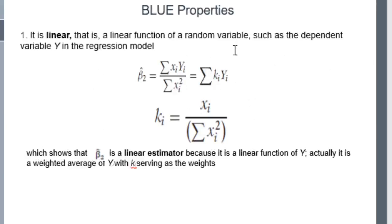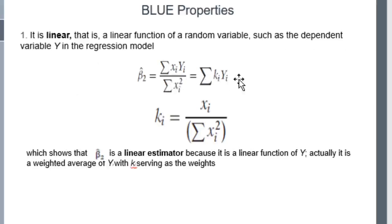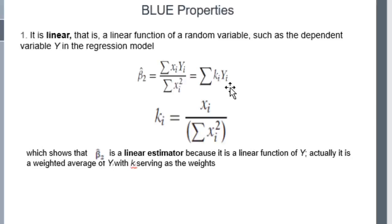The first property is linearity. The estimator is a linear function of a random variable such as the dependent variable. That is, beta2-hat equals sigma(xi * yi) divided by sigma(xi²), which equals sigma(ki * yi), where ki equals xi divided by sigma(xi²). This means beta2-hat is a linear function of the dependent variable — this is the linear property.